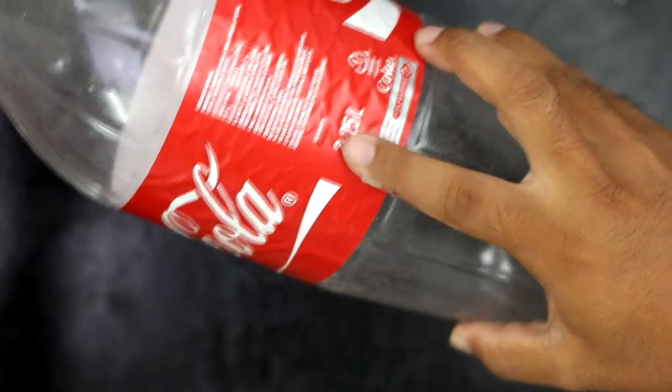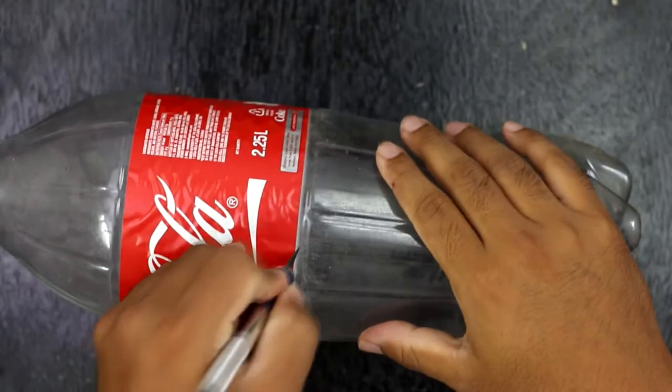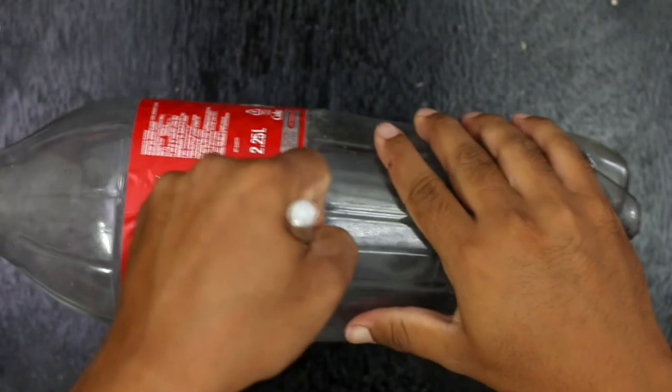Now I have taken a 2.25 liter coke bottle and cut it at the middle. Take the lower part of the plastic bottle.